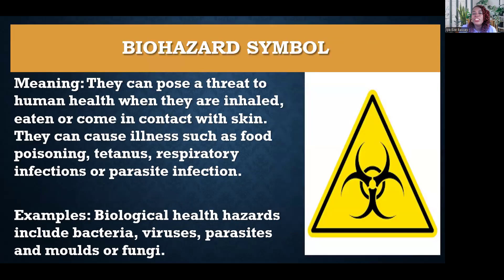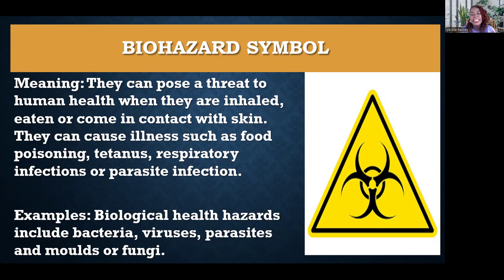The next symbol is the biohazard symbol — it's a circle with three other circles around it. It means that these substances can pose a threat to human life when inhaled, ingested, or when they come in contact with skin. They can cause illnesses such as food poisoning, tetanus, respiratory infection, and parasite infection. Take note, those of you that like eating in the lab — don't eat in the lab. Examples of biological health hazards include bacteria, viruses, parasites, and fungi.